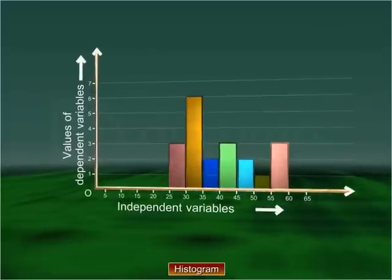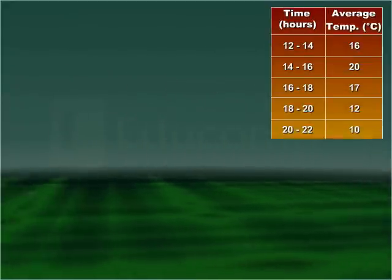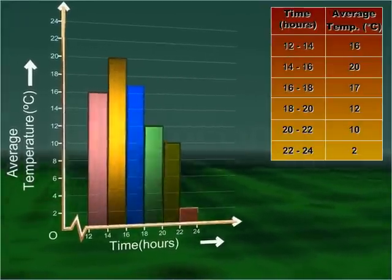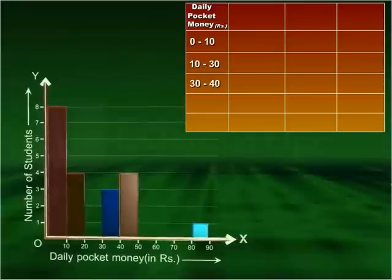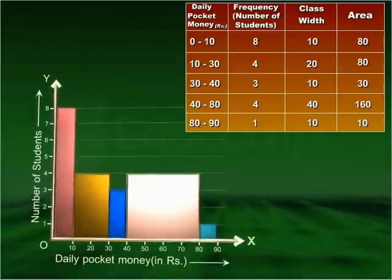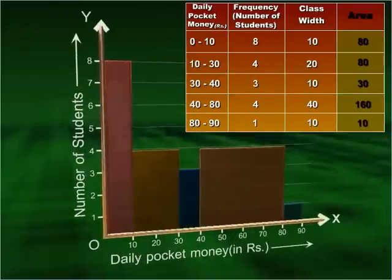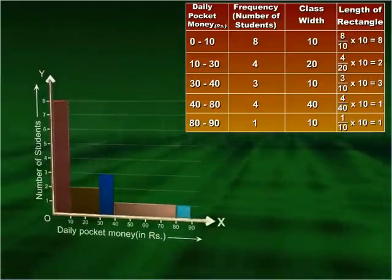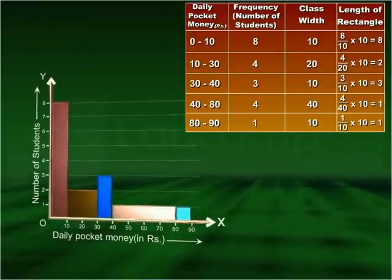Like bar graphs, histograms are also used to represent data graphically. Bar graphs are used to represent categorized data, whereas a histogram is used to represent data which is categorized into continuous intervals. In cases where the width of the rectangular bars varies, the area of the rectangular bars is not proportional to the frequencies. To make the area proportional to the frequencies, you adjust the length of the rectangular bars according to their class size so that the length is proportional to the minimum class size.